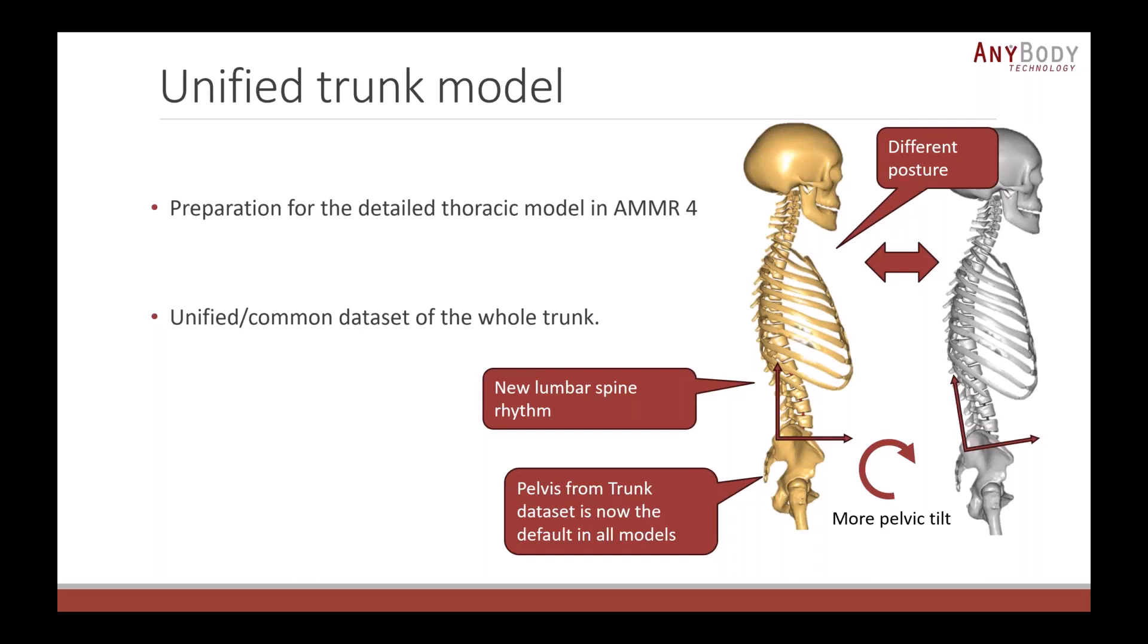I'm just going to talk about the major changes to the body model that you could expect when you use the new model repository. First, there is a new unified trunk model in AnyBody. We've worked on this because it's a preparation for the really detailed thoracic model that has come out in the next version of the model repository and which is available on GitHub. It basically unifies the whole trunk dataset. The pelvis is now considered part of the trunk model. It has a slightly different posture to the old one, with a bit more pelvic tilt. If you loaded a model with legs on, it would be the pelvis from the leg model that was included by default. It's not now. The pelvis from the trunk model is used per default because we consider the pelvis as part of the whole spine.